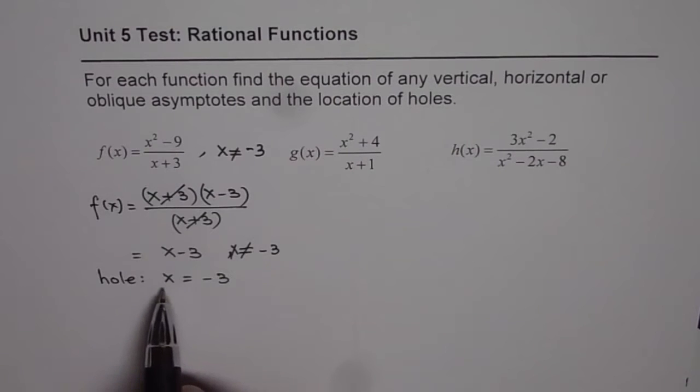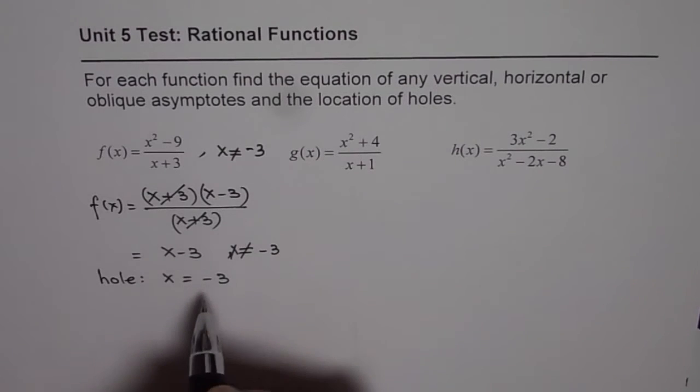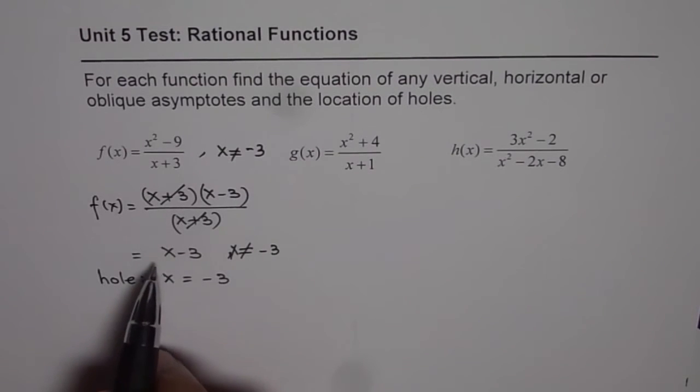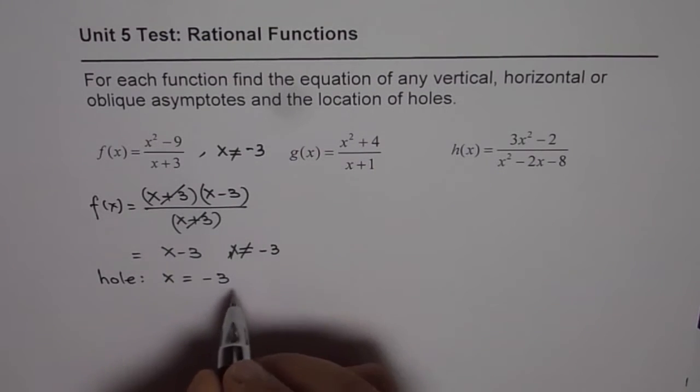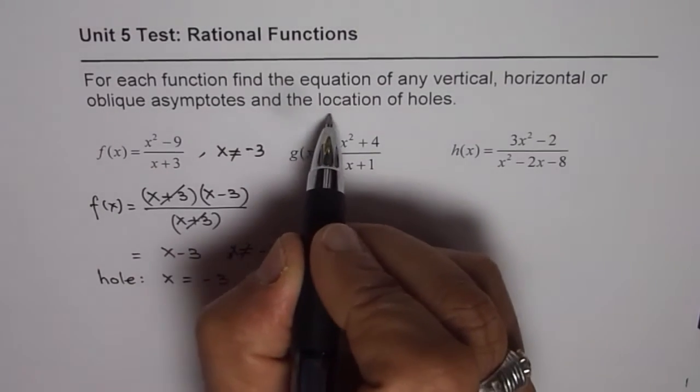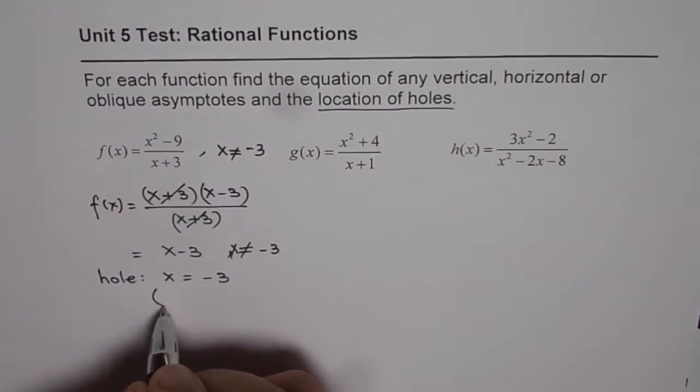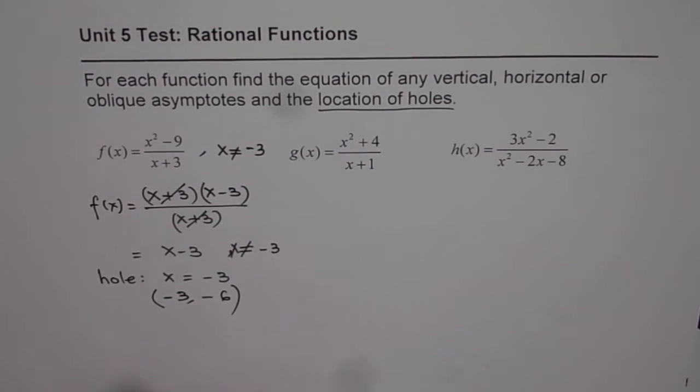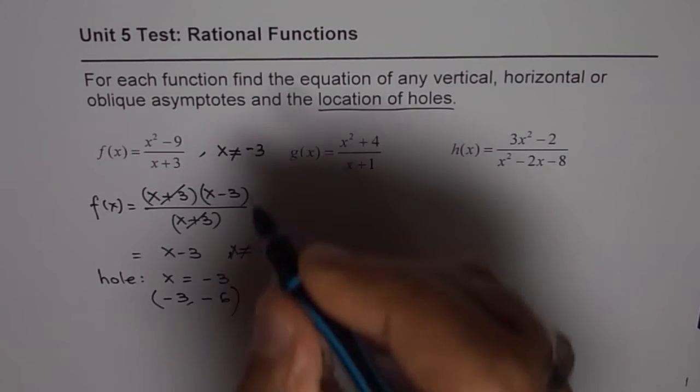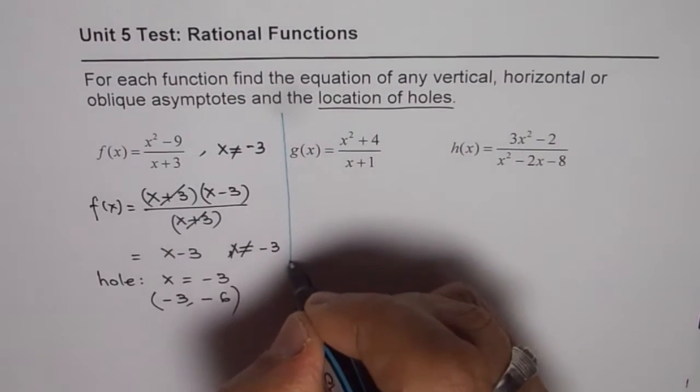Now in this case, we have only one discontinuity that is x equals to minus 3, a hole at minus 3. The location of this point will be, if I substitute minus 3 here, I get minus 6. So therefore the location which they are asking for, location of hole, we should write the coordinate point, location of hole is minus 3 minus 6. Now I have seen most students not writing the coordinate point itself and that's the reason why I have taken up this question. This is seemingly a simple question but most of the students lose marks here.